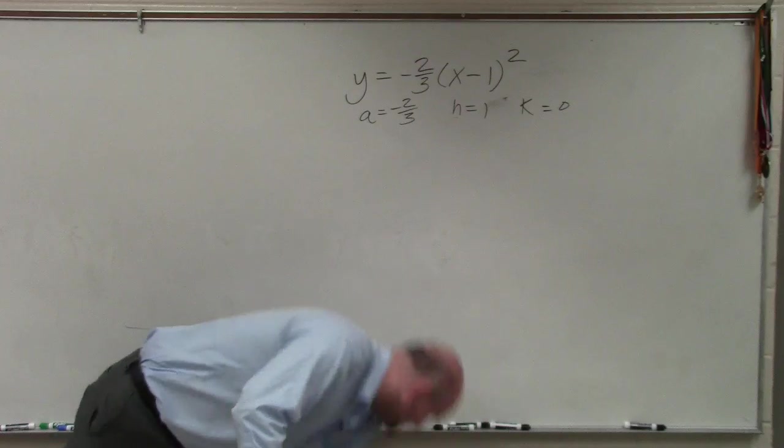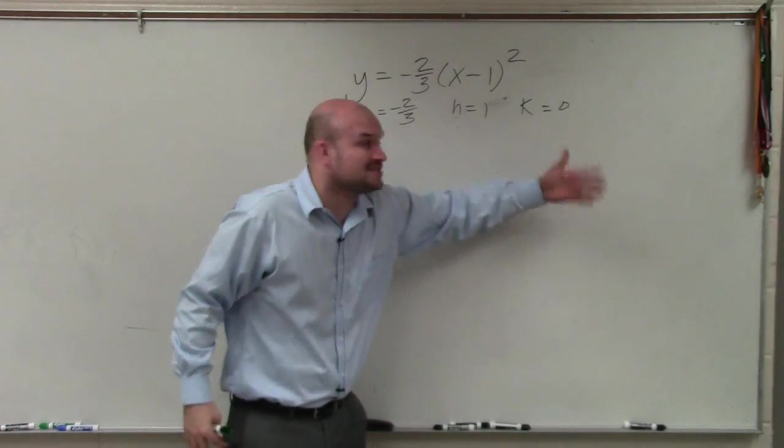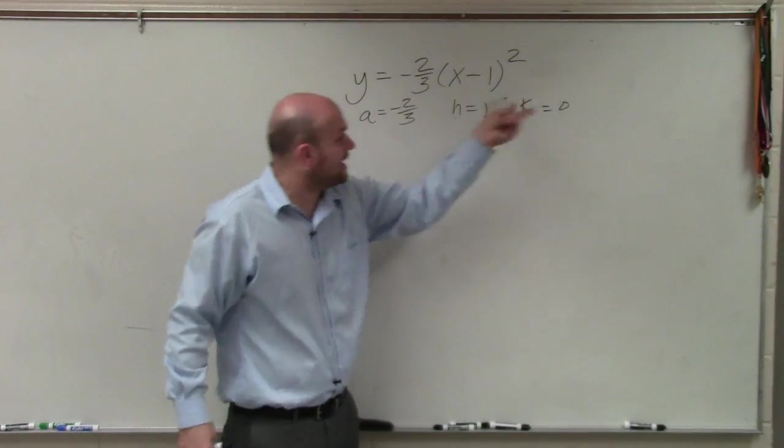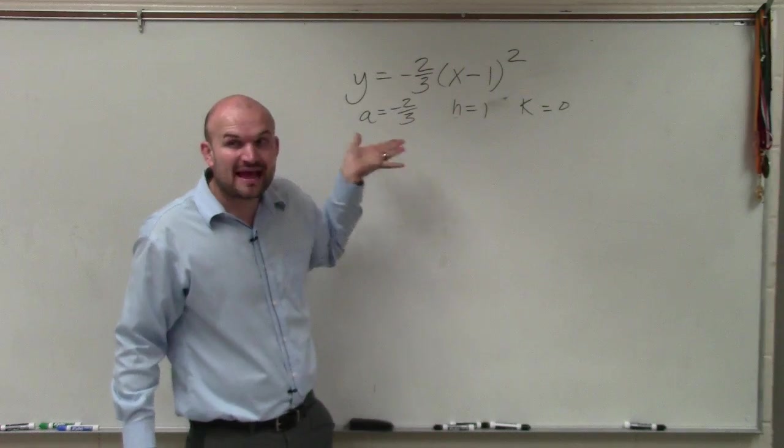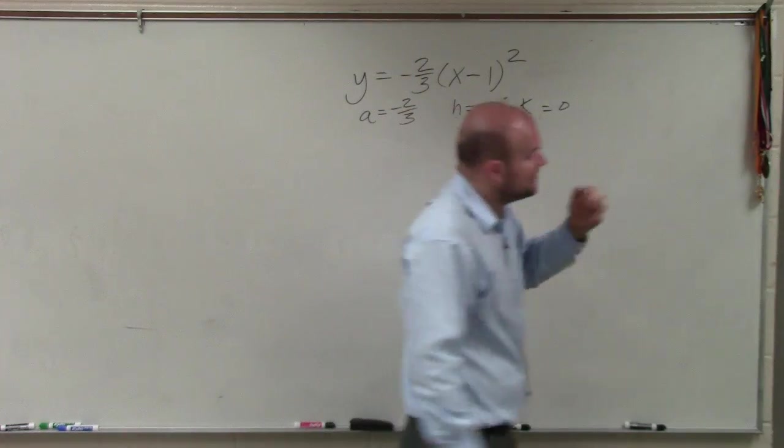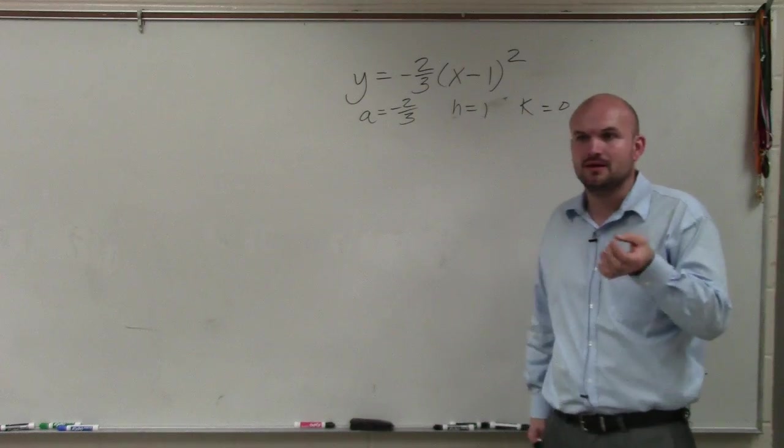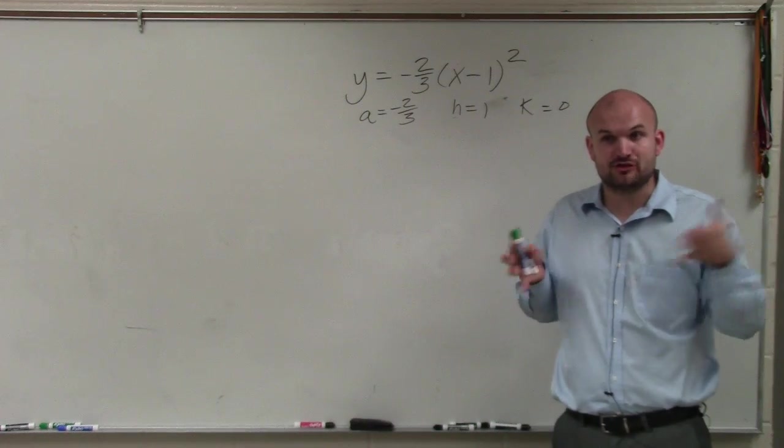Remember, h is always going to be the opposite, because it's x minus h. So here, I'm doing x minus 1, so h equals 1. And A is -2/3. This is very important, because we have to make sure we understand now our graph is going to be transformed.